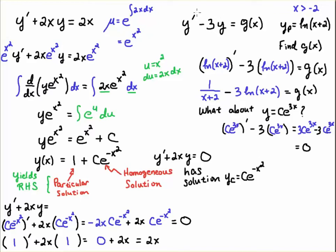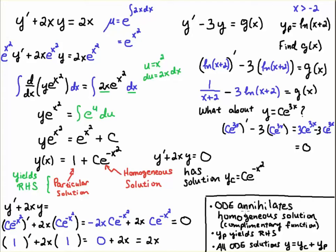You might be asking: shouldn't this just have c·e to the 3x, since that's the solution to the left-hand side? That is true, but if you plug that solution into the left-hand side, you're going to get 0. So let me summarize these concepts. An ODE annihilates the homogeneous solution, or the complementary function — if you plug in the solution with the arbitrary constant, you get 0. The particular solution yields the right-hand side. That means all ODE solutions have the form Y equals the complementary function plus the particular solution — or equivalently, the homogeneous solution plus the particular solution.